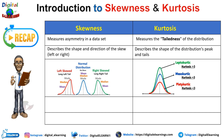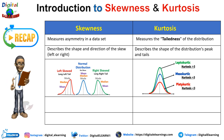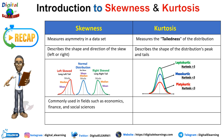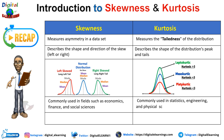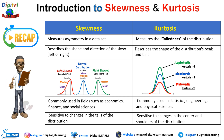In kurtosis, there are three types: leptokurtic, mesokurtic, and platykurtic. If the kurtosis value is 3, it is mesokurtic or normal distribution. If the peak is more than the normal distribution, it is leptokurtic with a kurtosis value greater than 3. If the peak is more flat, it is platykurtic with a kurtosis value less than 3. Skewness is commonly used in economics, finance, and social science, while kurtosis is commonly used in statistics, engineering, and physical science. Skewness is most sensitive to changes in the tail, while kurtosis is most sensitive to changes in the center and shoulders of the distribution.